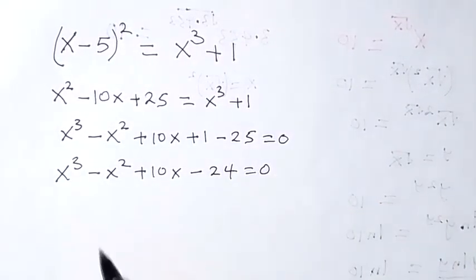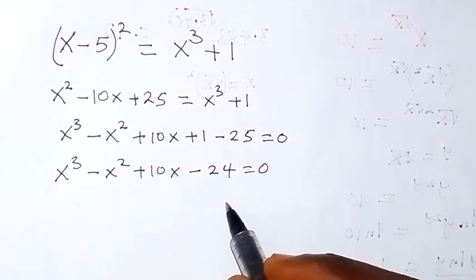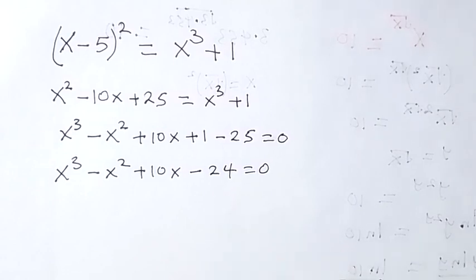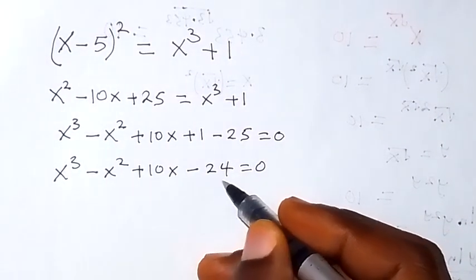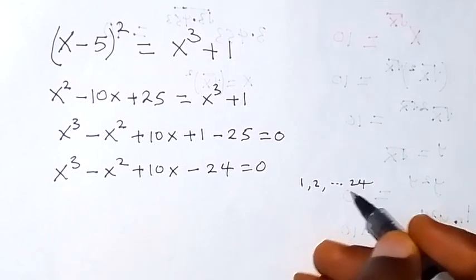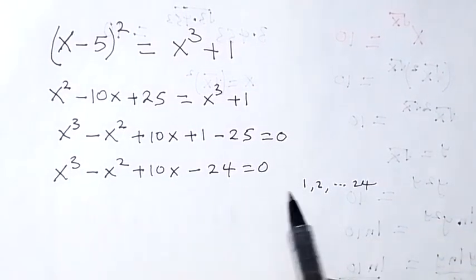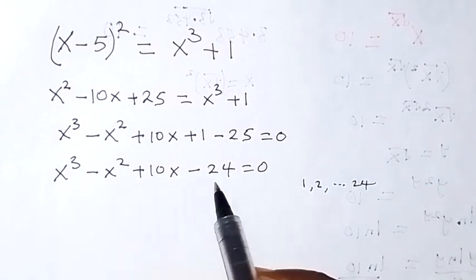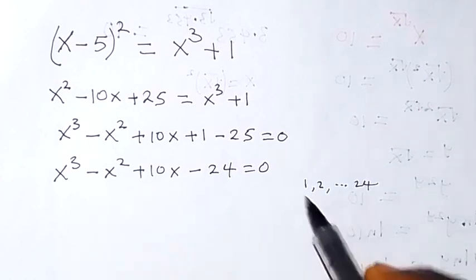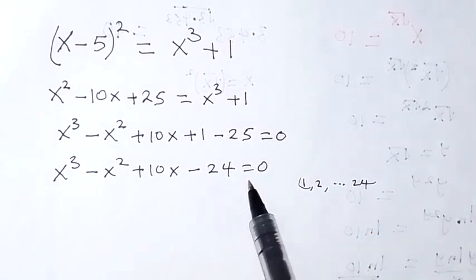From here we have a cubic equation, and we are expected to have at least one real solution. We can expect the rational roots to come from the factors of 24, starting from 1, 2, and so on up to 24. We substitute these integers to test which one gives 0, which would therefore be the root of this polynomial. When we put 1 here, we discover that substituting x equals 1 does not give us 0.